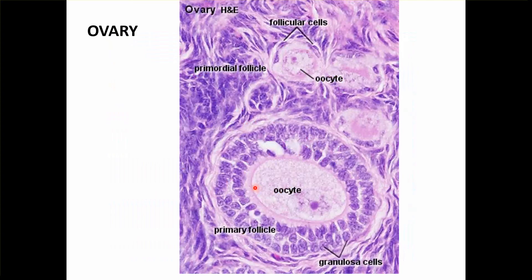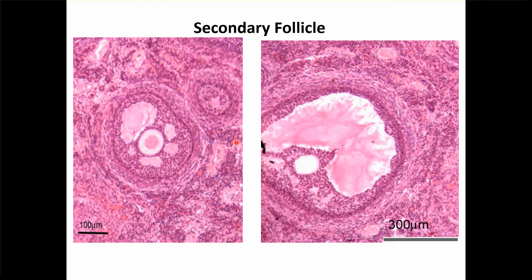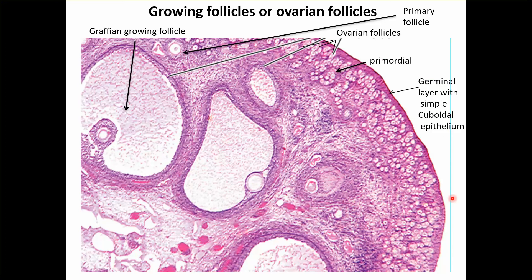Now coming to the female reproductive organs — the ovary. In the ovary you can see the primary follicle with the oocyte and the granulosa cells. The small ones are the primordial follicles. Then, if you see cavities developing within, that is the secondary follicle. This slide shows follicles at different stages.